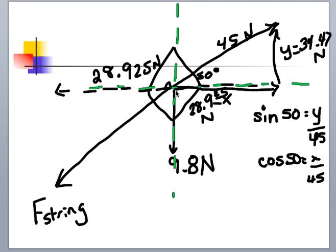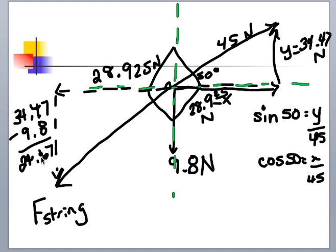How many forces do I have acting in the y direction? I have 9.8 newtons down, I have 34.47 newtons up, and then I have the y component of the string which is also down. If the kite is stationary, I know that the net force in the y direction must add up to zero. 34.47 newtons up minus 9.8 newtons down leaves me with 24.67 newtons in the y direction for the string.